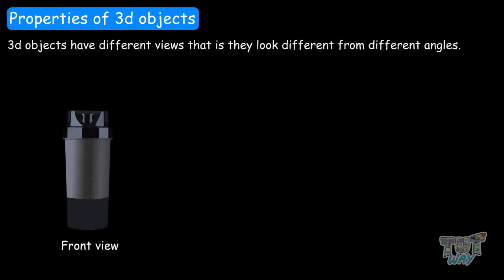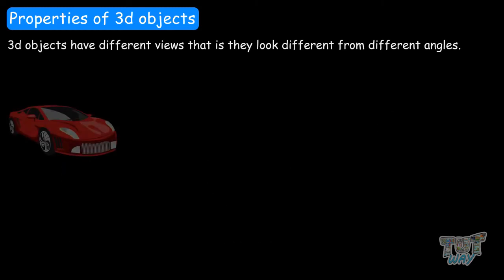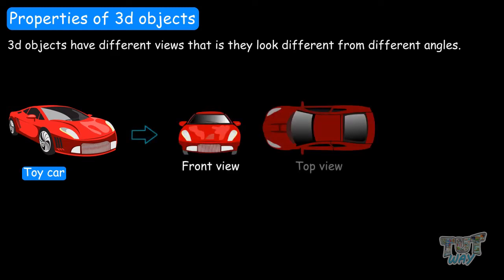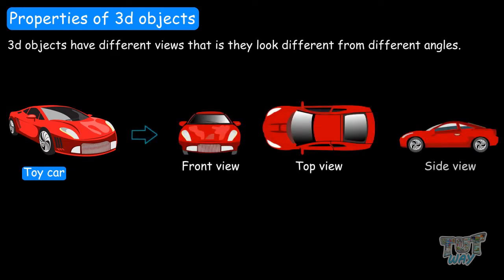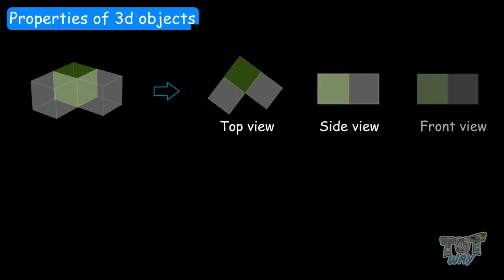Similarly, we have this tumbler. It has a different top view, different side view, and different front view. Similarly, the same can be said for this toy — it has various different views: a front view, top view, and side view. Here we have an object made up of 3 cubes. It has a different top view, side view, and front view.